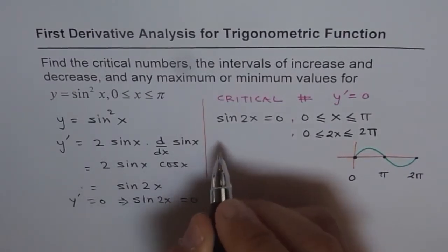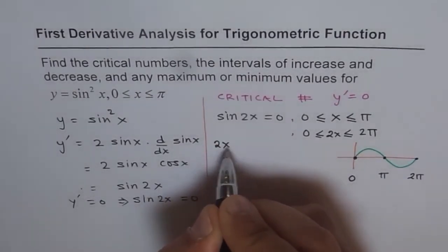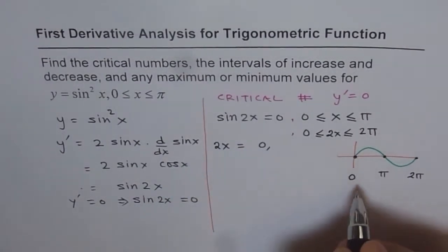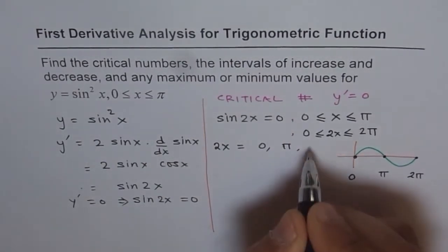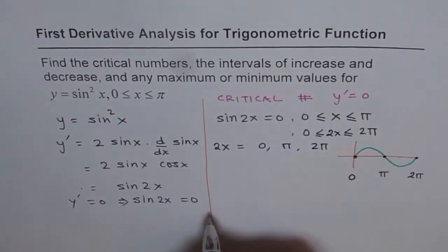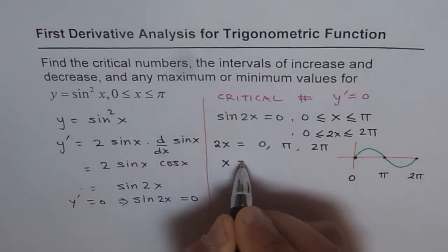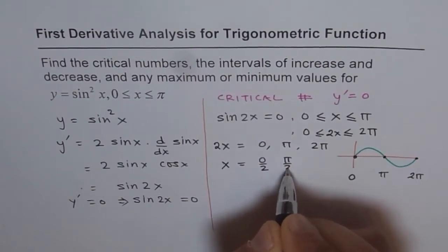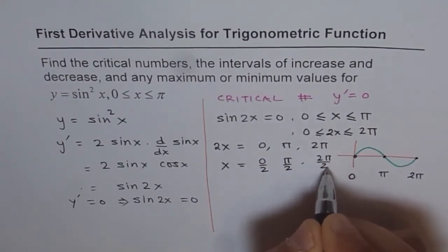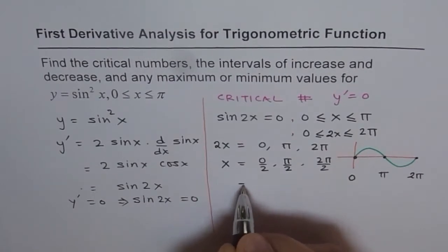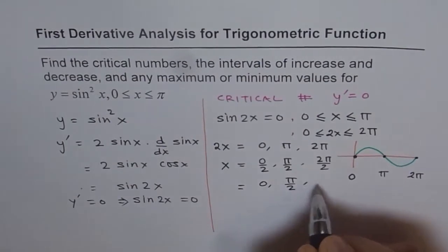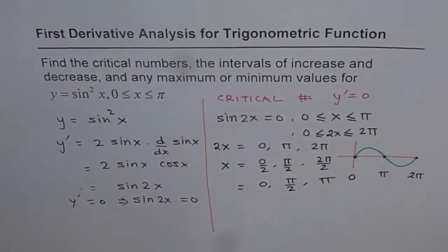This is for 2x, so we have 2x equal to 0, pi, or 2pi. These are the three solutions. Therefore x equals 0 divided by 2, pi divided by 2, or 2pi divided by 2. We get three values: x equals 0, pi over 2, and pi. These are our three critical numbers.